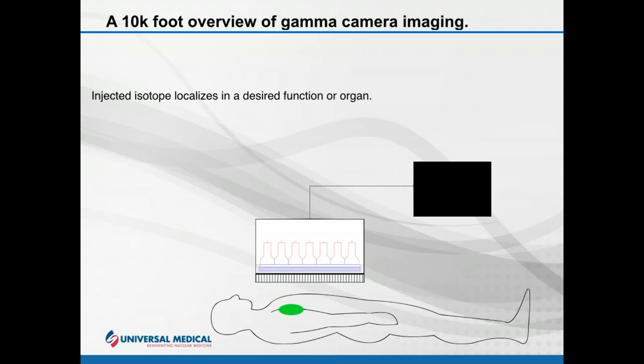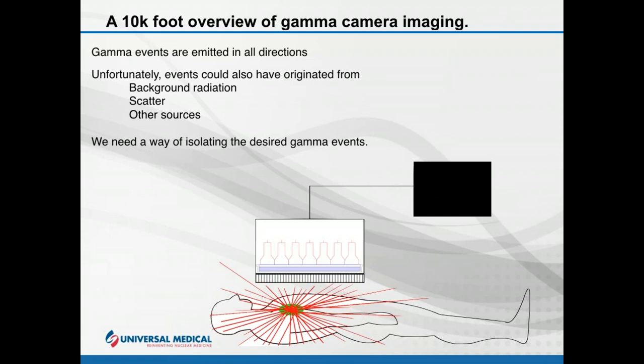Here's a 10,000-foot view of how a camera images. First, an isotope is injected into a patient and localizes into an area. That localization will then emit gamma rays. Gamma rays go everywhere — radiation goes in every direction — so there are inherent problems. We also have issues with background radiation and scatter, so we need a way of isolating the desired gamma events.